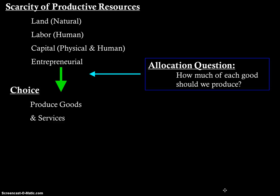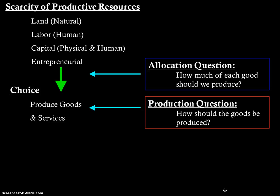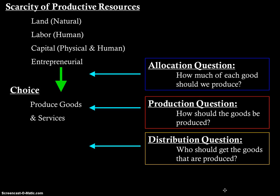The second is the production question: how should goods actually be produced? Are we going to have assembly lines, specialization, or individuals producing goods from start to finish? Will robots do everything? Can people pick their jobs or does the government assign them? The third is the distribution question: who should get the goods that are produced? How do we decide who gets what and how much? For example, here in the United States, you get things you're willing and able to pay for — that's how we answer the distribution question.